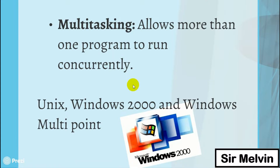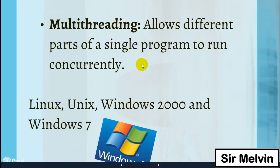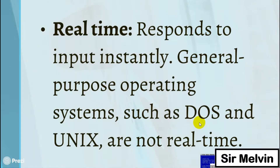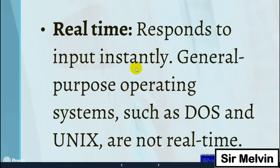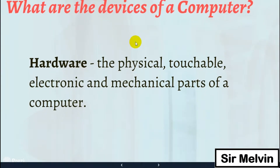Number three: multi-tasking — allows more than one program to run concurrently. Number four: multi-threading — allows different parts of a single program to run concurrently. Examples include Windows 7, with the greatest version being Windows 11. Number five: real-time — responds to input instantly. These are the general-purpose classifications of an OS.